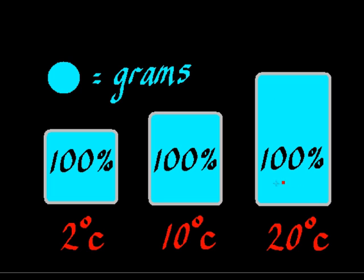A saturated parcel of air at 20 degrees centigrade can hold more water than a saturated parcel of air of the same size at 10 degrees centigrade. Likewise, a saturated parcel of air at 10 degrees centigrade holds more water than the same size parcel of air at 2 degrees centigrade. In other words, as we increase the temperature, the ability for a parcel of air to hold more water increases.